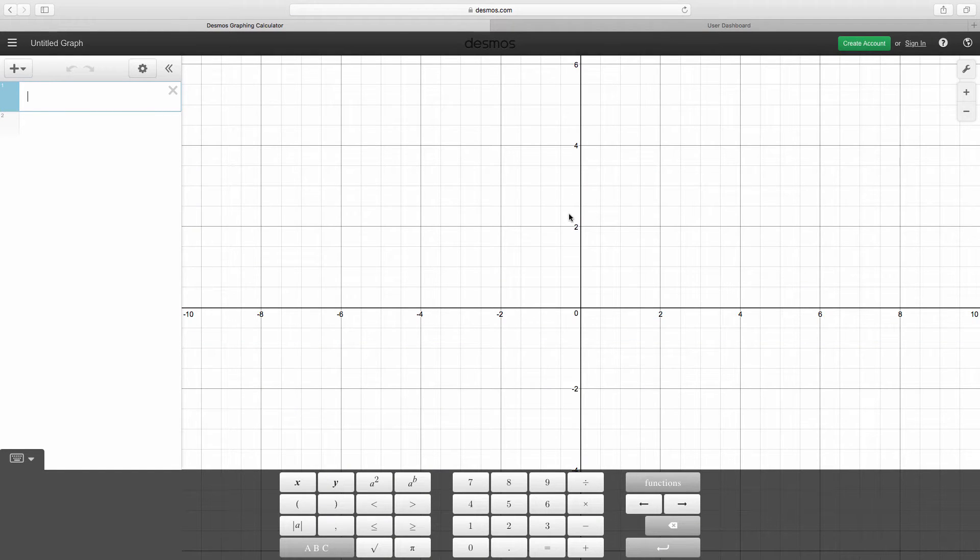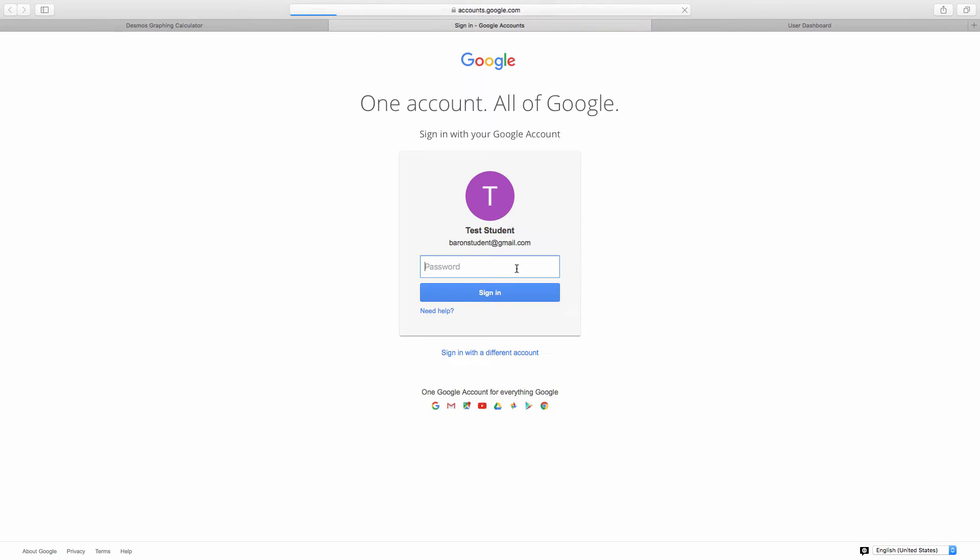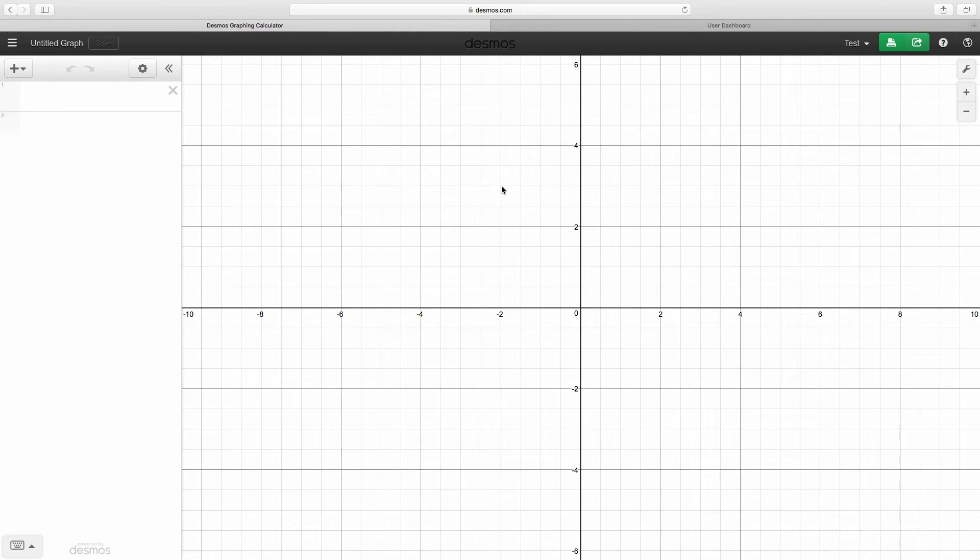Once we're at the website, we're going to first create an account. This allows us to save our graphs and share the graphs with our teacher. So we're going to click create the account, and we're going to link to our Google account and use our school email address. So it's going to bring up the Google sign-in page. That's where you're going to type in your school email address and password. Once you've signed in with your email address and password, you're going to click allow, and we have now created our Desmos account.